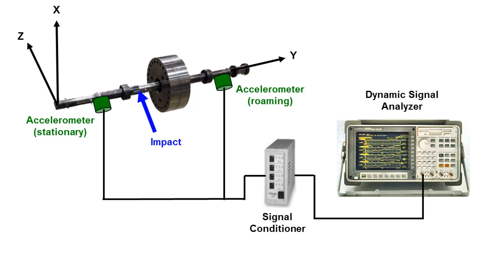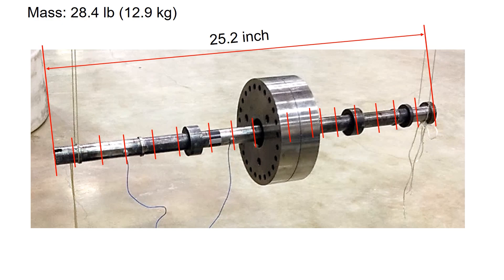Schematics of test setup is shown here. Two accelerometers are connected to the signal conditioner, and then they are routed to the dynamic signal analyzer. First thing you need to do is to mark the rotor equally spaced.